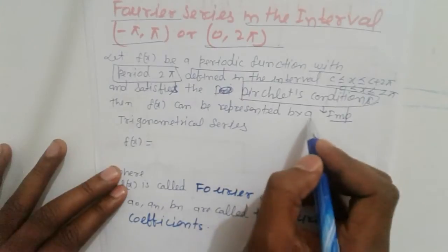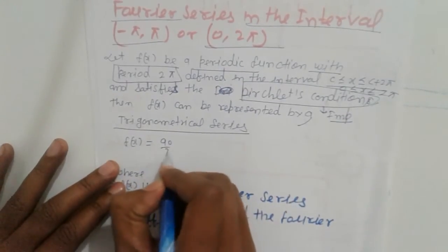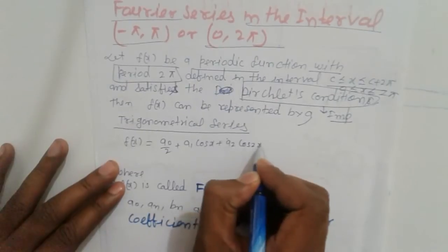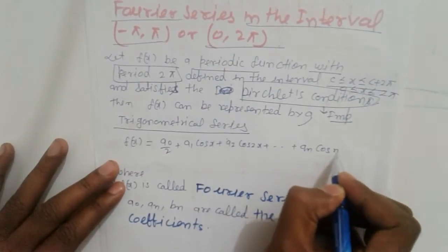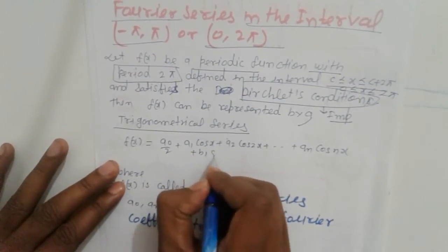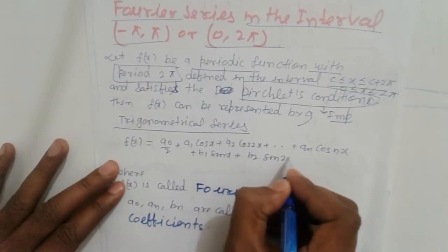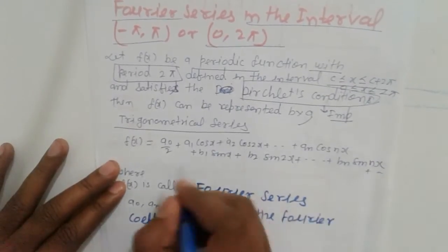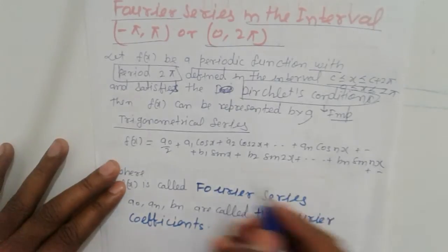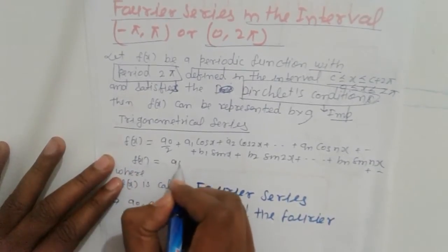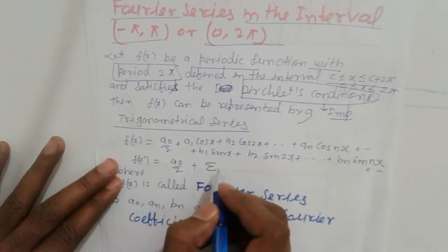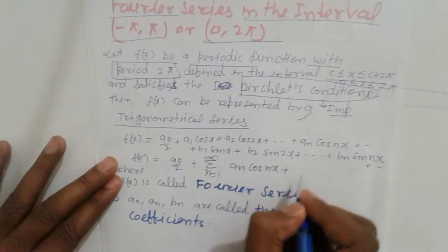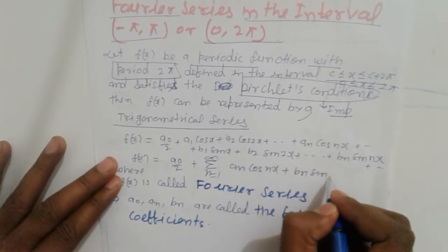Then f(x) can be represented by a trigonometric series: a0/2 plus a1*cos(x) plus a2*cos(2x) plus ... plus an*cos(nx), plus b1*sin(x) plus b2*sin(2x) plus ... plus bn*sin(nx) and so on. This can be written as f(x) equals a0/2 plus the summation from n=1 to infinity of an*cos(nx) plus bn*sin(nx).